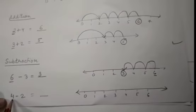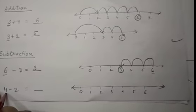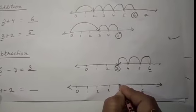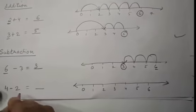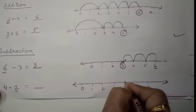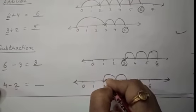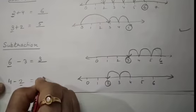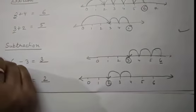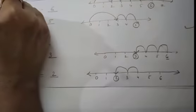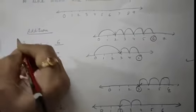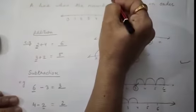So next example you see that 4 is given. Where is the number? 4. So start the pencil from here. So how many times you have to come? 2 times. 1, 2. So what number is there? 2. So 2 is the answer. So did you understand children? How to do the addition and subtraction with the help of number line?